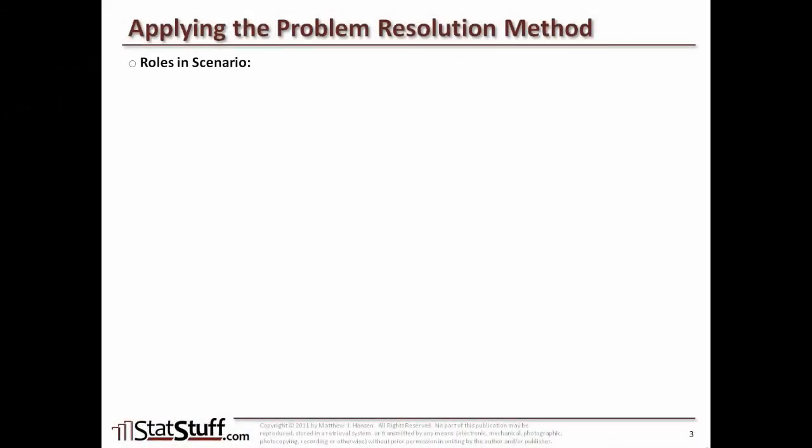My daughter Hannah, as the primary person experiencing pain, represents the business itself — or the process within the business area where we're feeling the pain. It's the area that needs attention, where symptoms exist, and why we need an improvement project. My wife and I, as parents, represent the sponsor or champion — we're accountable and responsible for taking care of Hannah, and in the same way the sponsor is ultimately accountable for that business area and responsible for alleviating the issue.